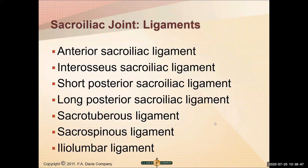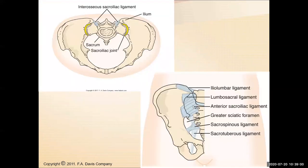The sacroiliac ligaments include: the anterior sacroiliac ligament, the interosseous sacroiliac ligament, the short and long posterior sacroiliac ligaments, the sacrotuberous ligament, the sacrospinous ligament, and the iliolumbar ligament. There are a whole rack of ligaments there to ensure very little movement in that non-axial joint, keeping everything firm so that weight-bearing and load transfer can happen.